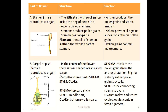The stamen is the male reproductive organ — the little stalk with a swollen top inside the ring of petals. Stamens produce pollen grains and have two parts: anther and filament. Pollen grains are produced inside the anther. The anther produces and stores pollen grains, which are yellow powder-like grains. Inside each pollen grain there is a male gamete.